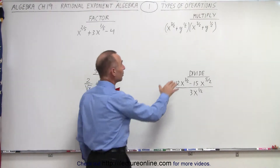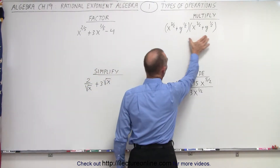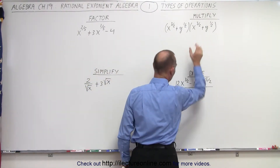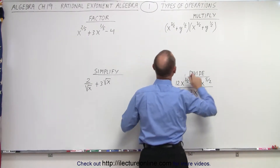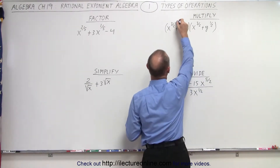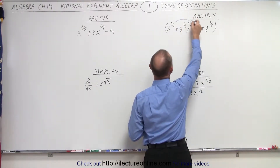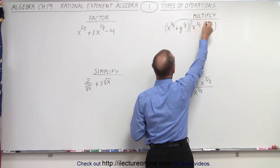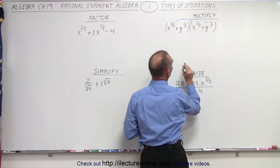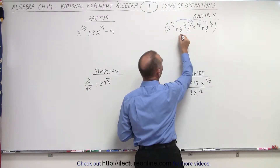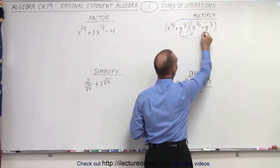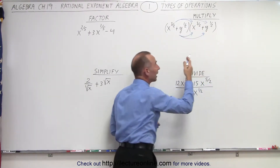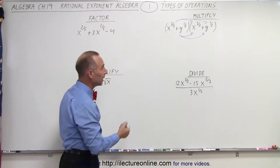When we have two binomials and we multiply them together, you're going to take each term of the first binomial and multiply times each term of the second binomial, then you take the second term and do it again.